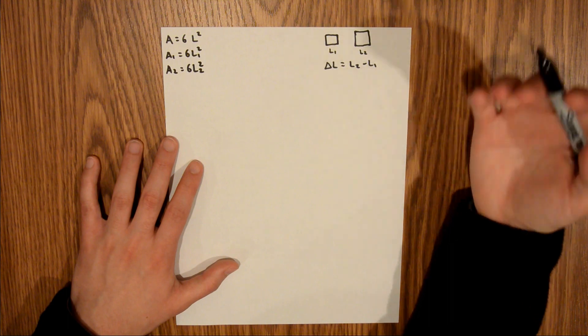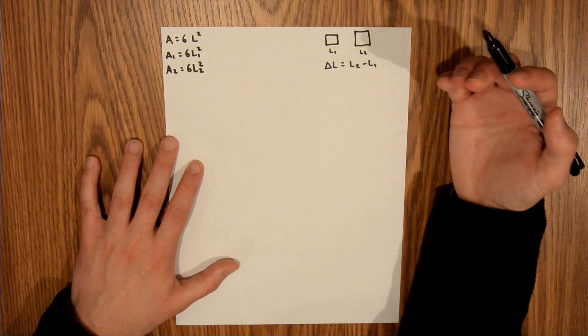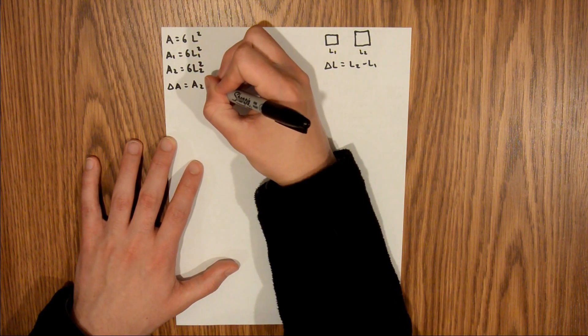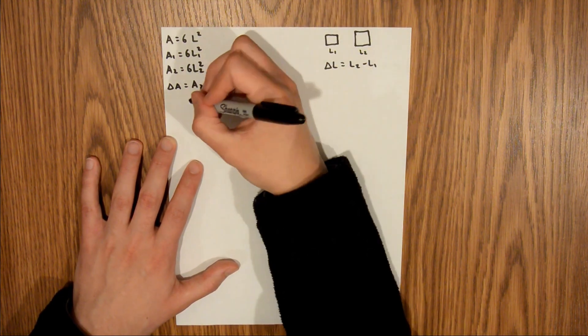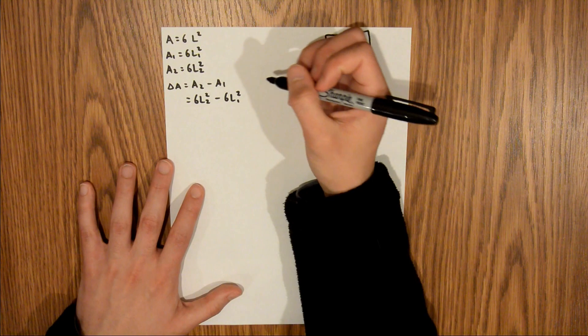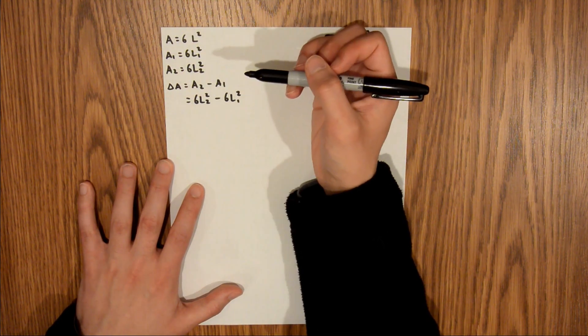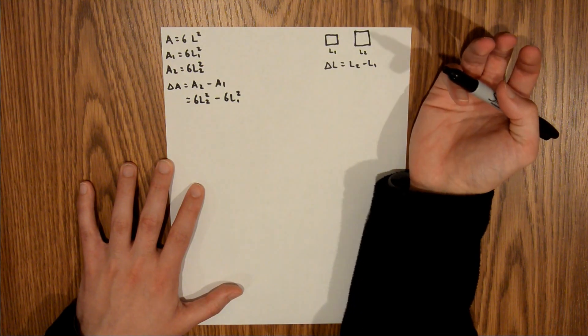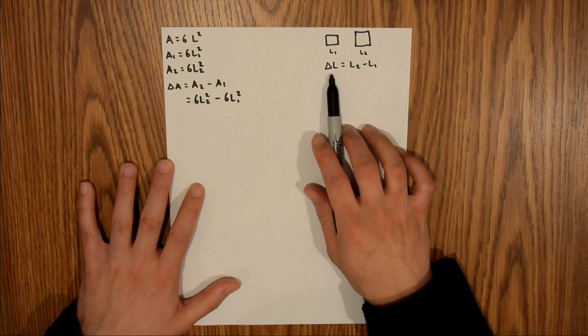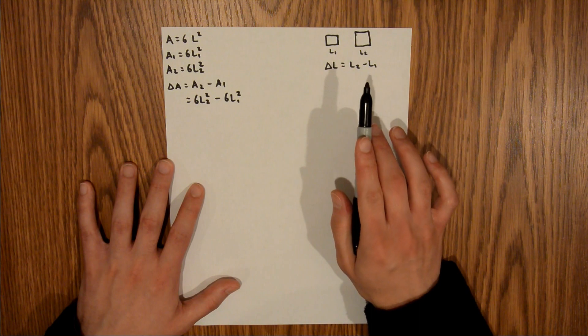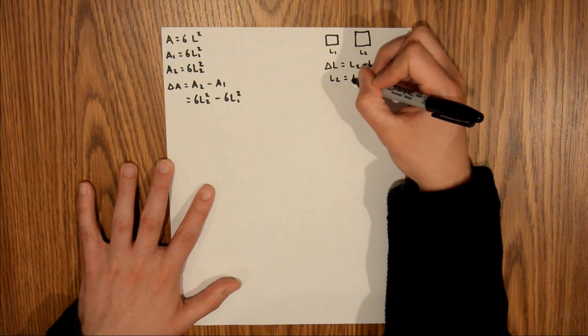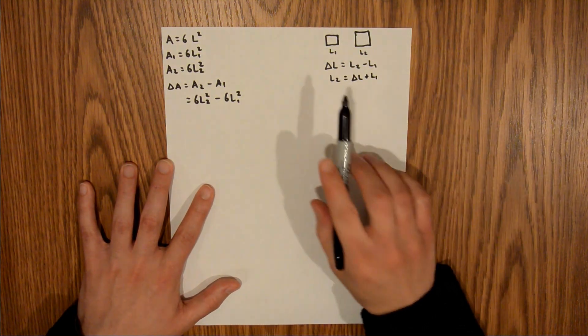Since we are looking for an increase in surface area, which is the same as a change in area, we can say the change in area is equal to A2 minus A1. We just found both of those, so we can plug those in: 6L2 squared minus 6L1 squared. Now we're given L1 in the problem, but we don't know what L2 is. We need to write it in terms of things we do know. We know L1 and delta L we can find via a linear expansion equation. So we can rearrange for L2: L2 is equal to delta L plus L1. I'm going to take that and plug it in.